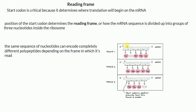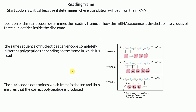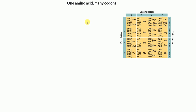So the key point of this example is that from the same nucleotide sequence, depending on the reading frame — that is, the position of the start codon — we can get different polypeptides. The start codon determines which frame is chosen and thus ensures the correct polypeptide is formed.